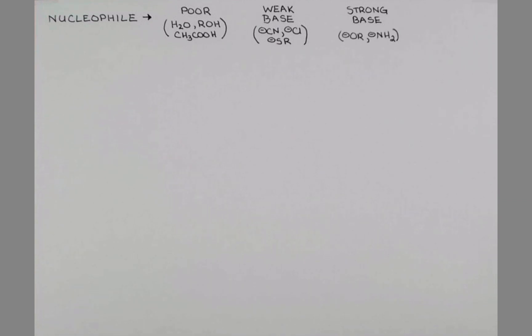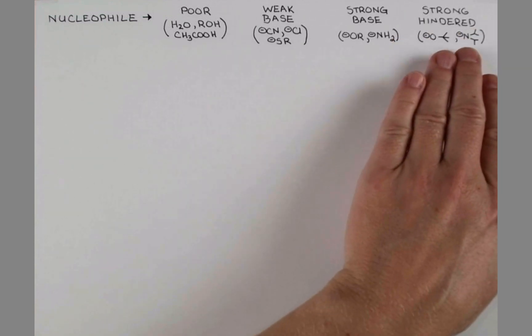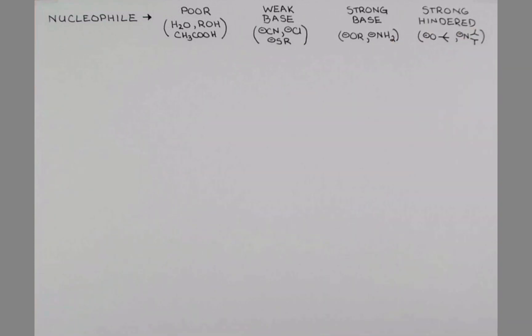The final category we'll consider are strong bases that are quite hindered. The most common of these is potassium or sodium tert-butoxide. Another example is LDA, lithium diisopropylamide. On this chart, the lithium or potassium counter ions are not shown.